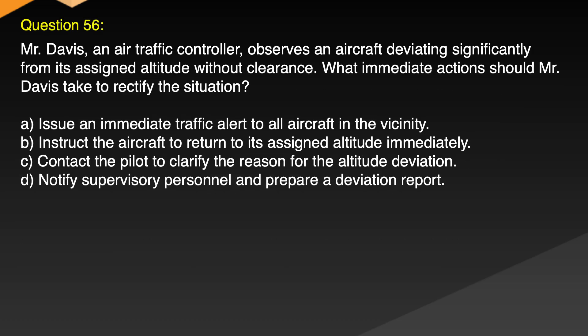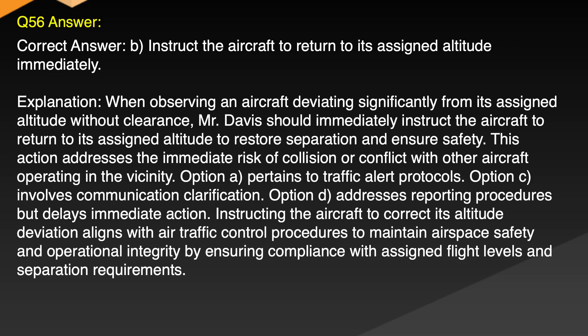Question 56. Mr. Davis, an air traffic controller, observes an aircraft deviating significantly from its assigned altitude without clearance. What immediate actions should Mr. Davis take to rectify the situation? A. Issue an immediate traffic alert to all aircraft in the vicinity. B. Instruct the aircraft to return to its assigned altitude immediately. C. Contact the pilot to clarify the reason for the altitude deviation. D. Notify supervisory personnel and prepare a deviation report. Correct answer: B. Instruct the aircraft to return to its assigned altitude immediately.